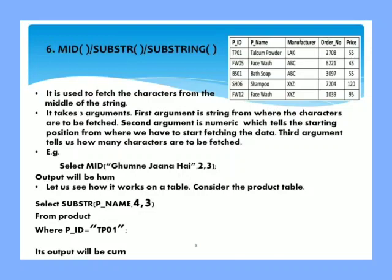Next example: select SUBSTR PNAME comma 4 comma 3 from product where PID equals TP01. We will look at the table. TP01 is for Talcum Powder. Fourth position we have to find out. TAL three characters, fourth position is at C. So from fourth position you have to fetch three characters: CUM. So the output will be CUM.